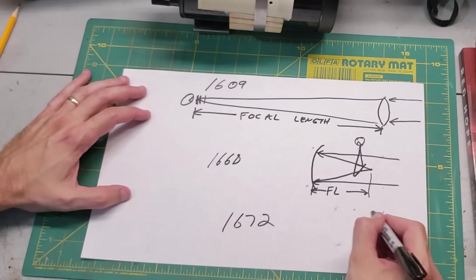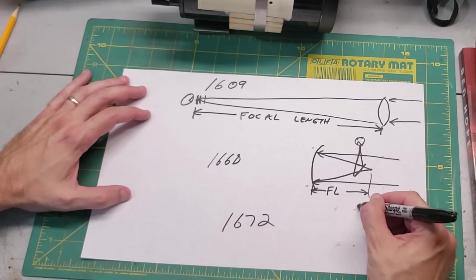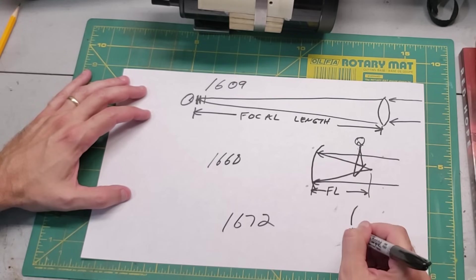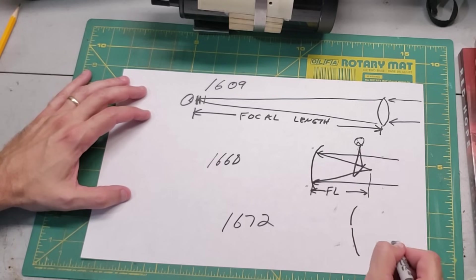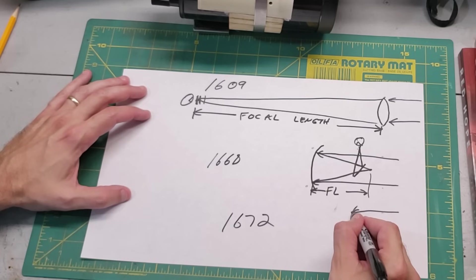The light waves came in like this, they would also bounce forward to a focal point. But what he did was, he put a mirror here that was not angled.